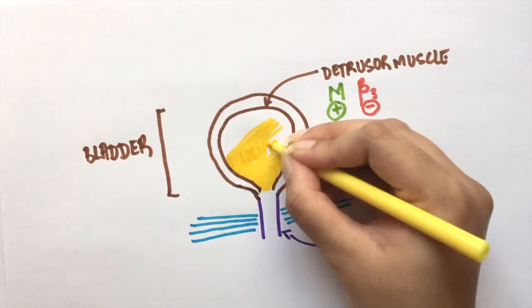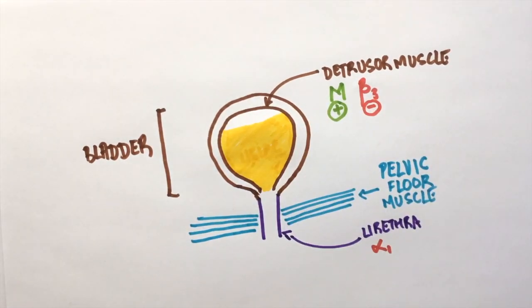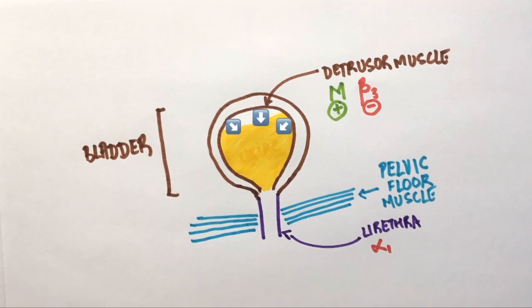Usually, when the bladder has a certain amount of urine, you get a sensation to void. The M receptors will then get activated and the urine will flow out.